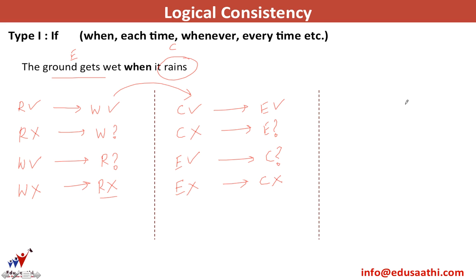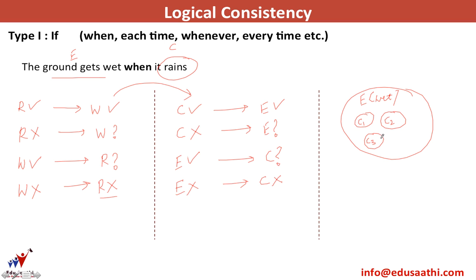Looking at this with a Venn diagram: I have this effect, which is the ground getting wet, and I can have multiple causes. C1 would be raining, C2 would be a bucket of water, C3 can be an open pipe in the ground, and C4 can be dew droplets. So all these causes will result in the ground getting wet. In other words, I have one effect — the ground getting wet — and I can have multiple causes C1, C2, and C3.